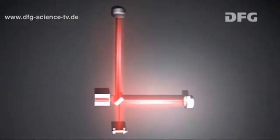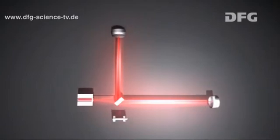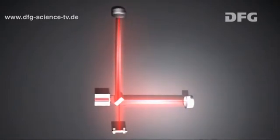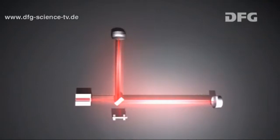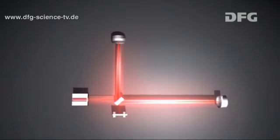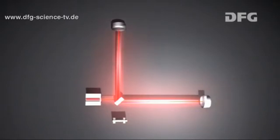One arm becomes a little bit longer, the other somewhat shorter. A moment later, this change in length reverses. This opposing expansion and contraction of the two arms continues while the gravitational wave passes through the detector.